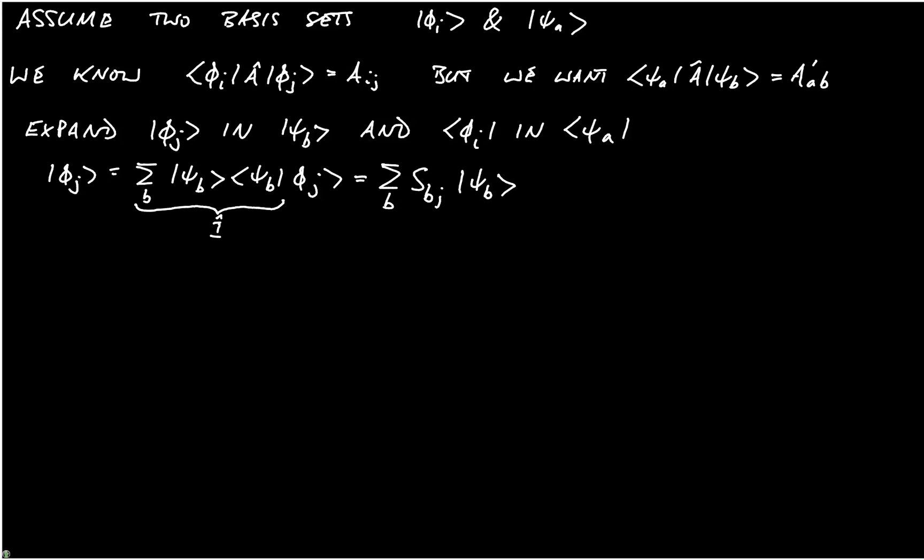But we can also write that as the sum over B of S_BJ psi_B. For the bras, we have that bra phi_I is the sum over A of bra phi_I psi_A, and remember that we're using this notation where we put the dagger on the S inside the brackets to make it clearer exactly what's going on.